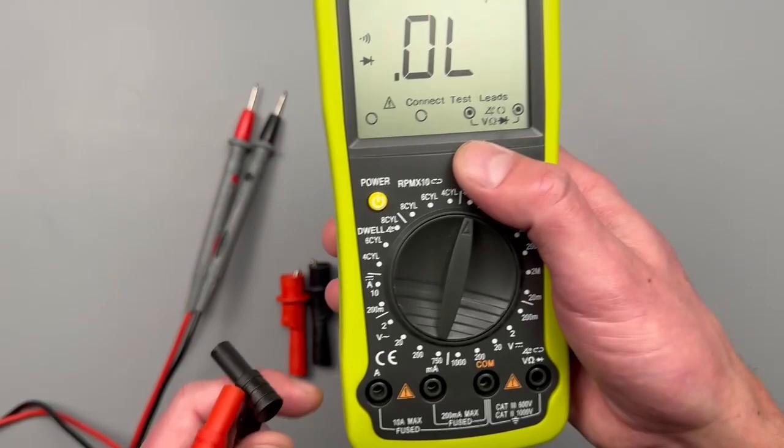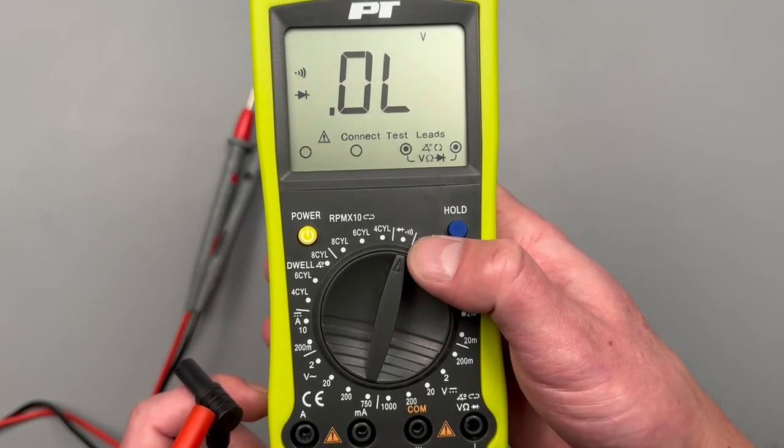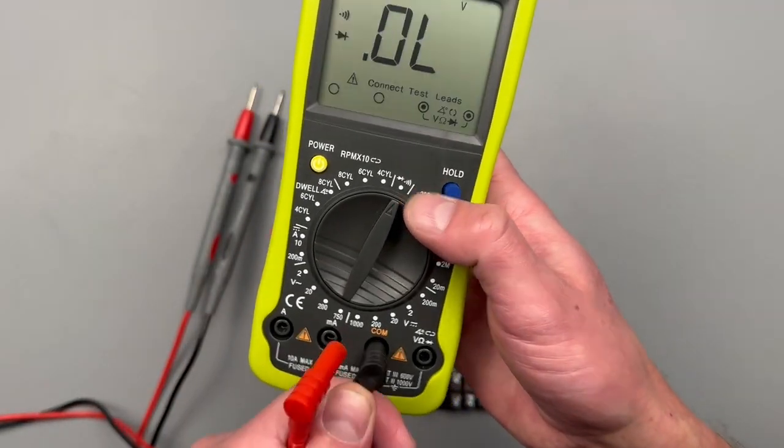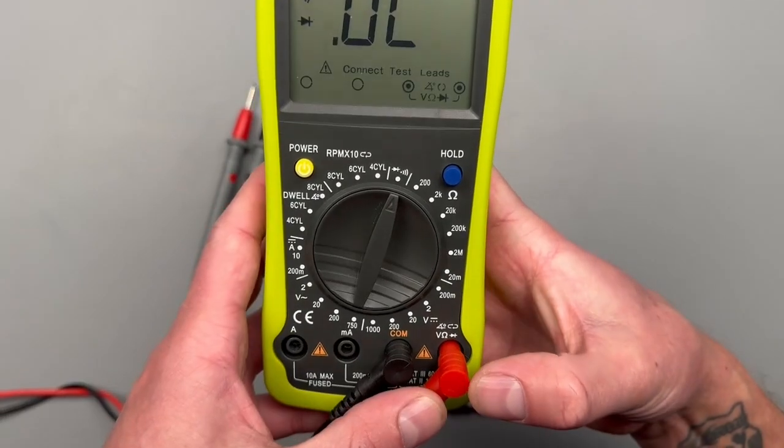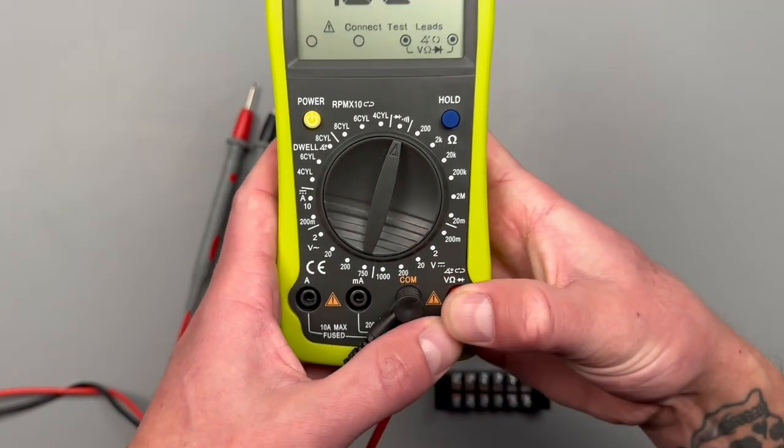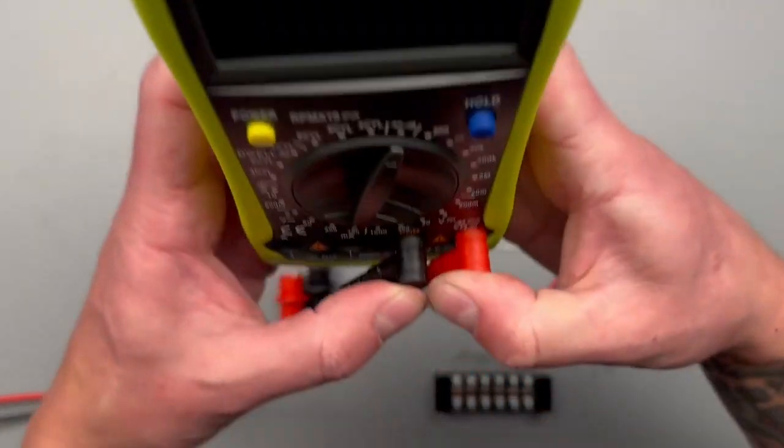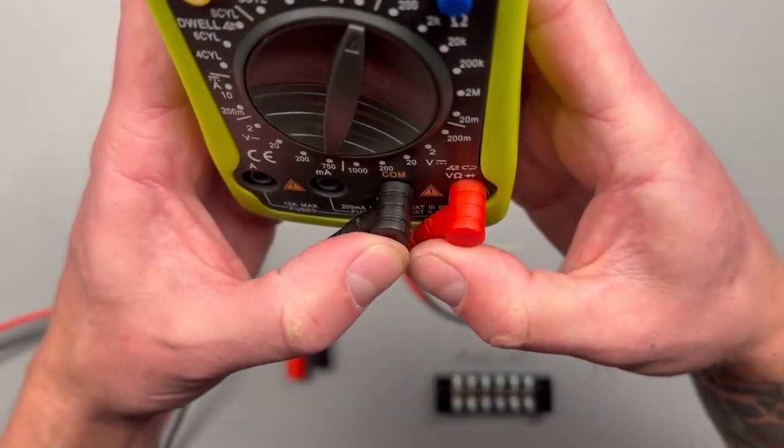It's going to show you, test leads needed for, we're on diode and continuity setting. I need a test lead in my com and a test lead in the dwell voltage ohm diode port. And you're going to want to make sure these leads are put in there nice and snug.